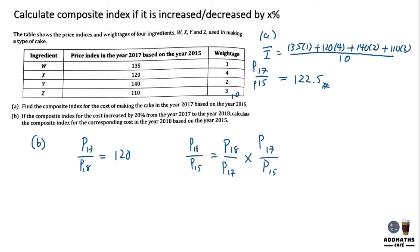If the composite index cost increases by 20% from year 2017 to year 2018, this means the composite index of 2018 over 2017 equals 120. When they say '2017 to 2018,' 2017 is the base — it goes on the bottom — and 2018 is on the top.